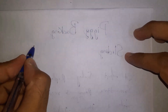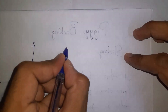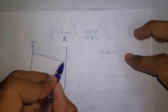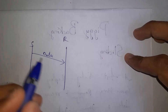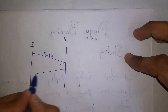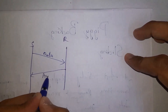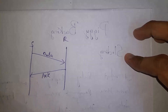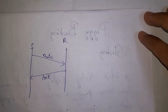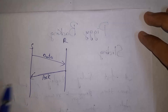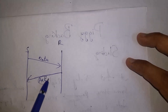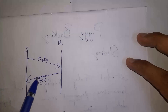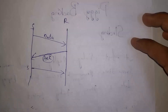Before starting this video, you need to know what is acknowledgement. For example, there is a sender and there is a receiver. Sender will send data to receiver. Whenever sender sends data to receiver, receiver will send acknowledgement. Acknowledgement is nothing but a reply message — receiver will give a reply whether data is received correctly or not. If sender receives acknowledgement, then sender will understand that data has successfully reached to receiver.